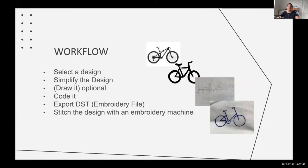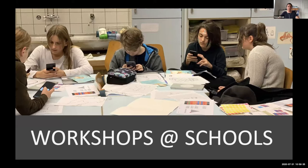So our workflow was first of all the students selected the design, then if the design is too complicated, they need to simplify the design, draw it optionally on a paper, on a piece of paper. And the next step would be to code it and then to export an embroidery file, a DST file, and the last step is to stitch the design on a textile.